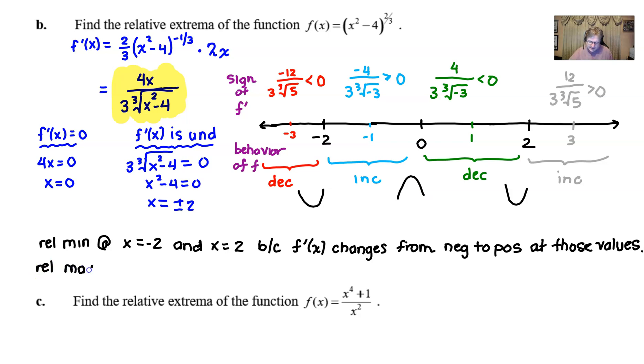We have an increase to decrease here at 0, so that suggests we have a relative max at x = 0. The reasoning is because f'(x) changes from positive to negative at x = 0. And that takes care of this.